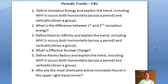Here are the check-for-understanding questions for this section on Periodic Trends: (1) Define ionization energy and explain the trend across a period and down a group. (2) What is the difference between first and second ionization energy? (3) Define electron affinity and explain the trend across a period and down a group. (4) What is effective nuclear charge? (5) Define atomic radius and explain the trend horizontally and vertically. (6) Why are the most chemically active nonmetals found in the upper right corner? Give these a try — we'll discuss them together in class.